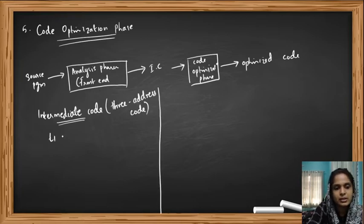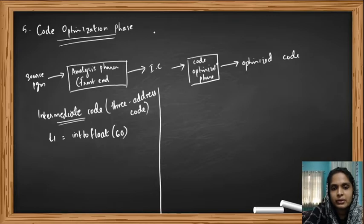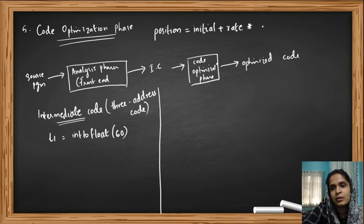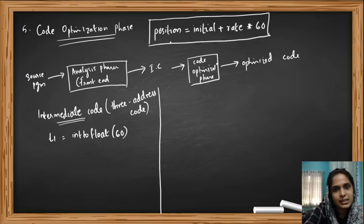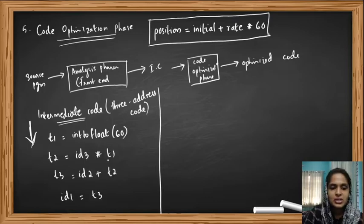The intermediate code example was: T1 = int_to_float(60). If you haven't watched the previous video, please go and watch it to understand how this intermediate code was derived. Our source statement is: position = initial + rate * 60. We converted this source statement into the following intermediate code. Position was identifier ID1, initial was ID2, rate was ID3.